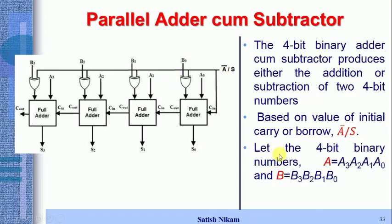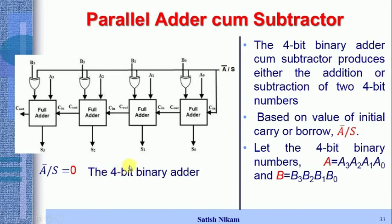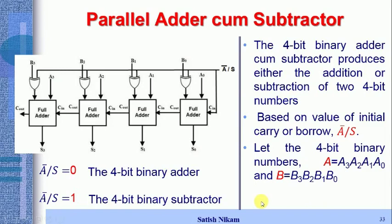We use four-bit binary numbers A and B. For addition, we add A (A3 A2 A1 A0) and B (B3 B2 B1 B0). For subtraction, B is subtracted from A. When /S = 0, the circuit works as a four-bit binary adder; when /S = 1, it works as a four-bit binary subtractor.